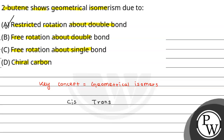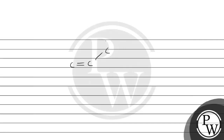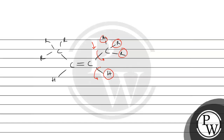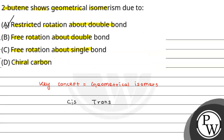Option C is free rotation about single bond. Let's consider: even if the single bond rotates, for example if we have C double bond C with R, H on one side and C with R, R, R on the other — even if the single bond rotates, the position of the atoms relative to the double bond does not change. So single bond rotation makes no difference here. Option C is also not the answer.